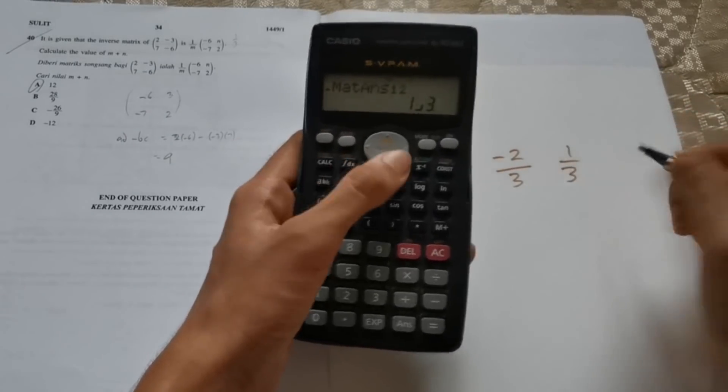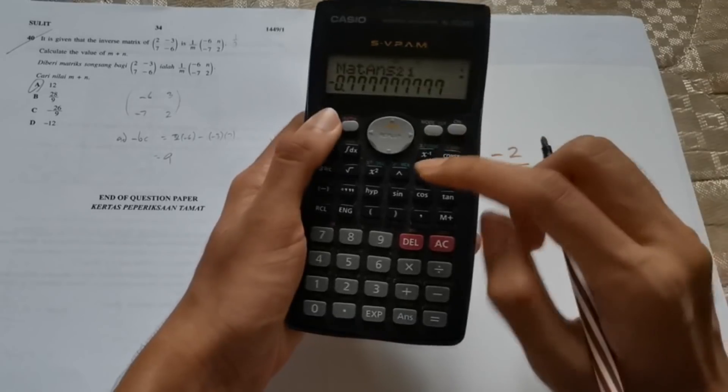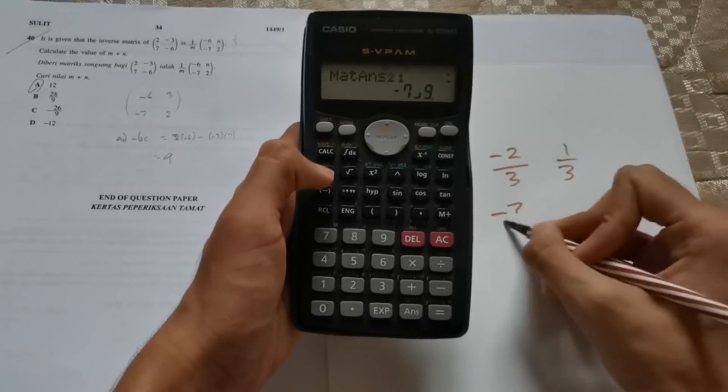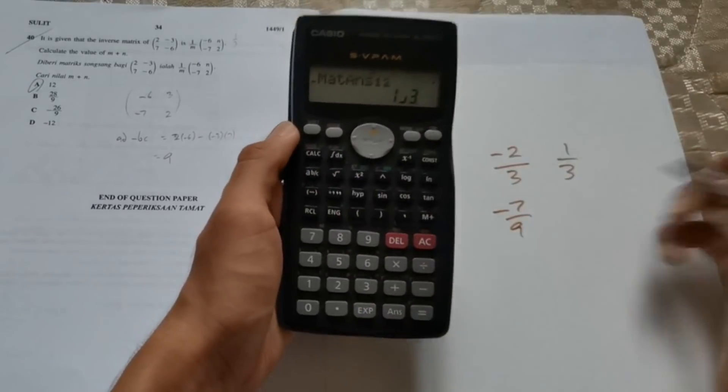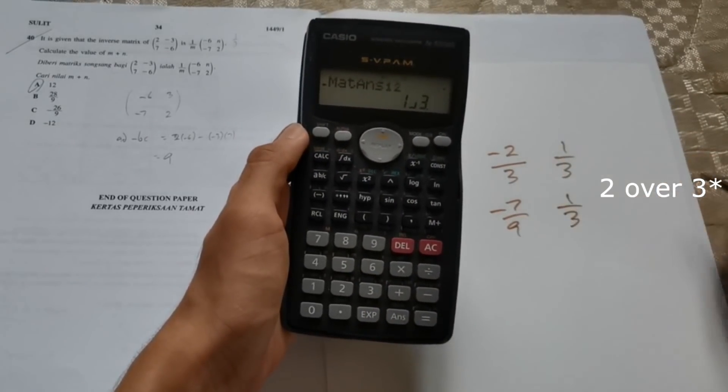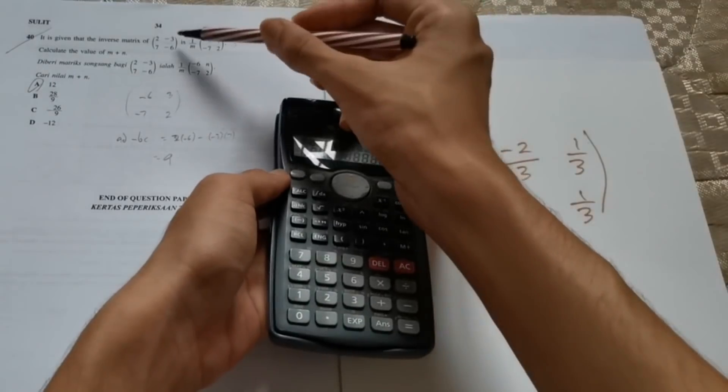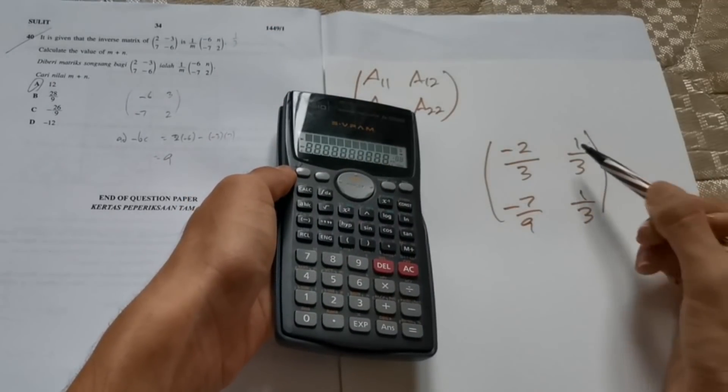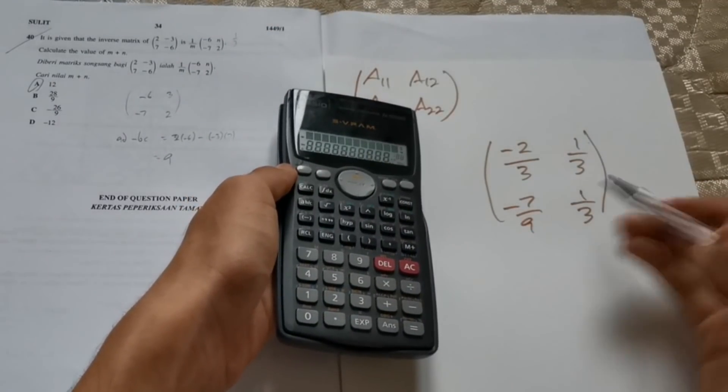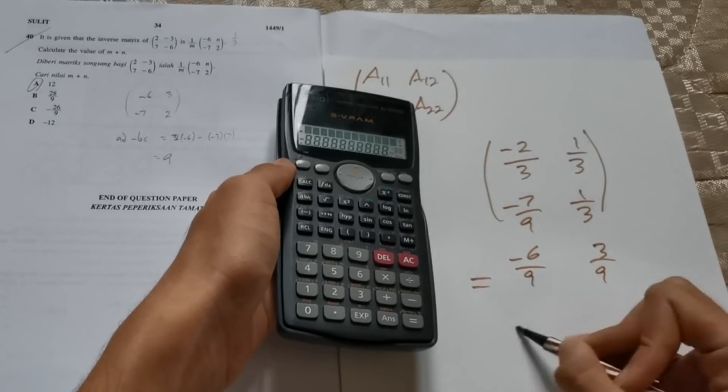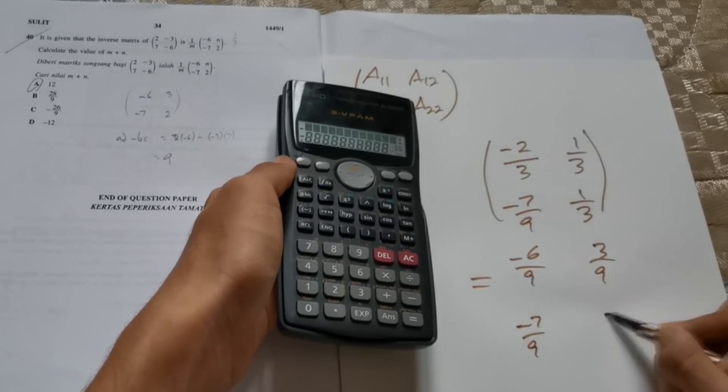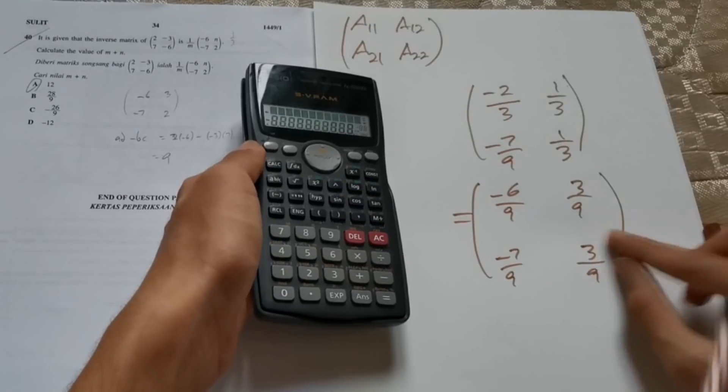And then you press the right arrow. And then you press shift bracket again. You get 1 over 3. You press right arrow again. Shift bracket will give you negative 7 over 9. And then you press the right arrow again. Shift bracket will give you 2 over 9. So this is the inverse of this matrix.